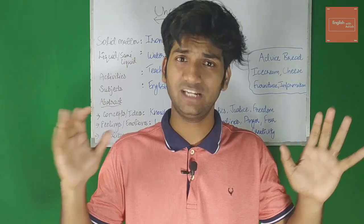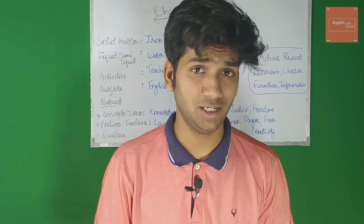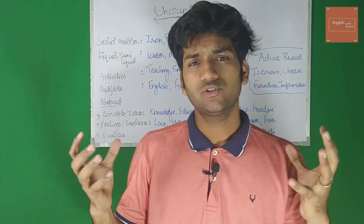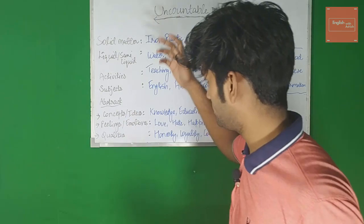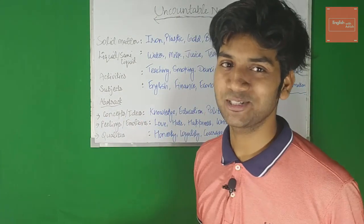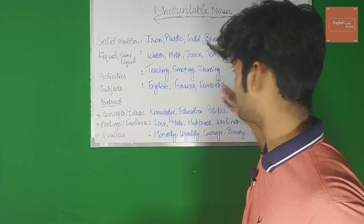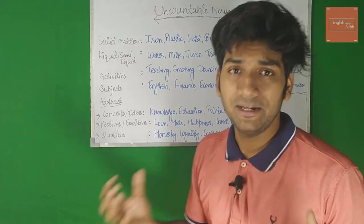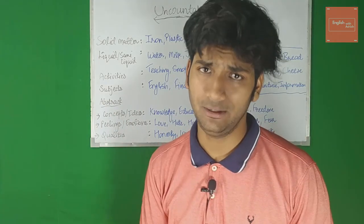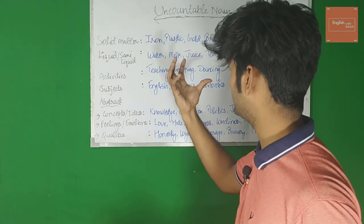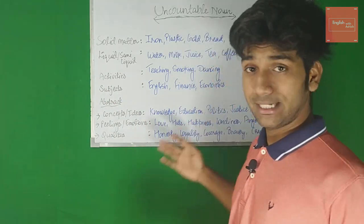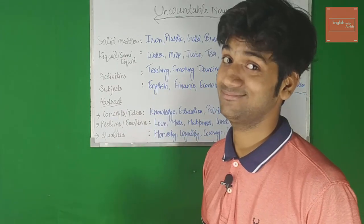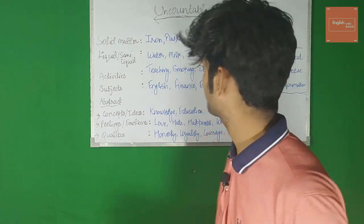These are common uncountable nouns we mistakenly use as countable — don't make these mistakes. Now let's come back to the categories. Solid matters include: iron, plastic, gold, bread, cheese. Can you count iron? You can count rods made out of iron, but you cannot count iron itself. The same goes for plastic — you can count toys made of plastic, but not plastic as a material. Gold, bread, cheese — all uncountable as substances.